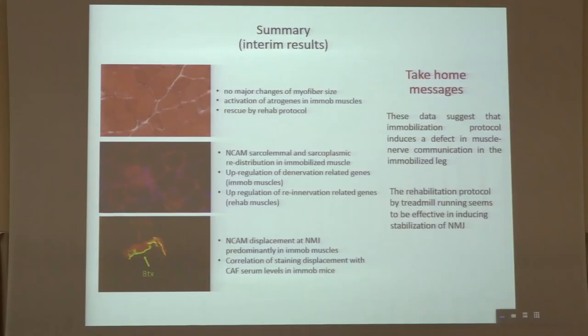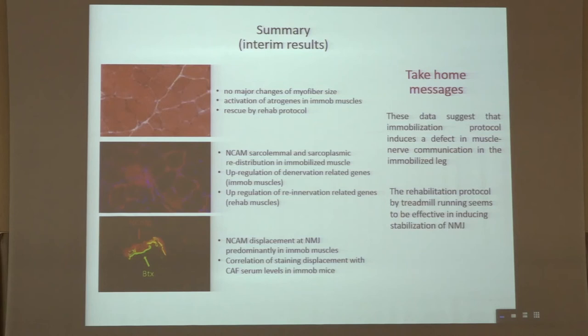The take-home messages are that all data together — including Feliciano's ultrastructural analysis — suggest that immobilization induces a defect in muscle-nerve communication in the immobilized leg, which could be a trigger event for skeletal muscle atrophy. The rehabilitation protocol by treadmill running seems effective in rescuing this destabilization, inducing re-stabilization of the neuromuscular junction.